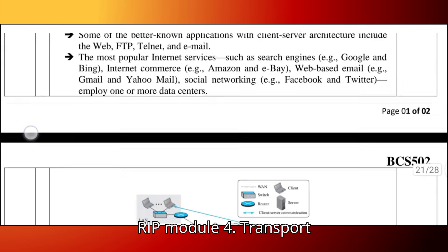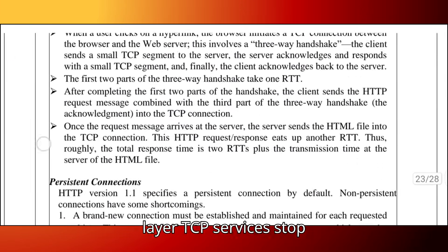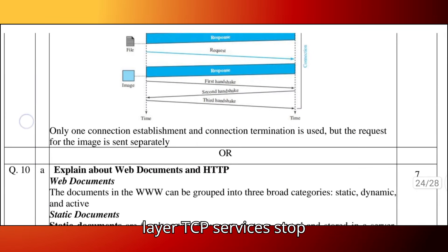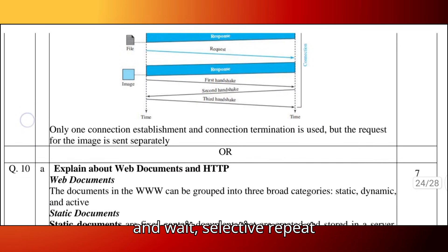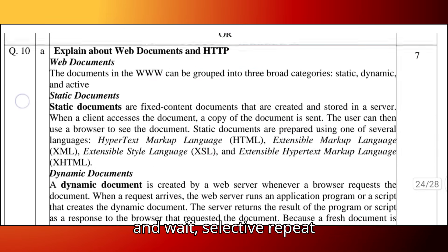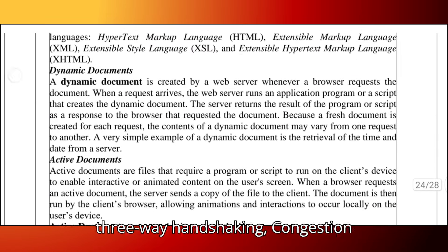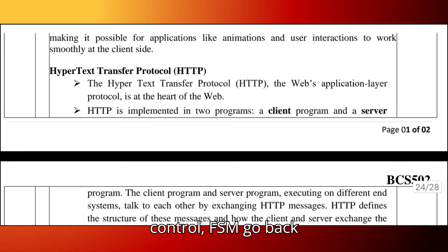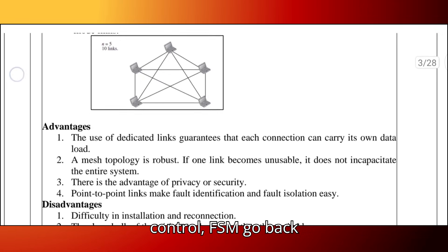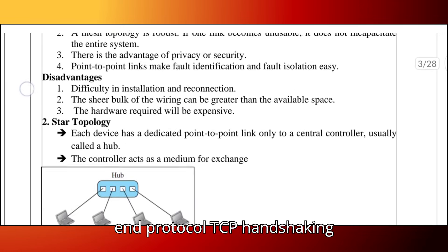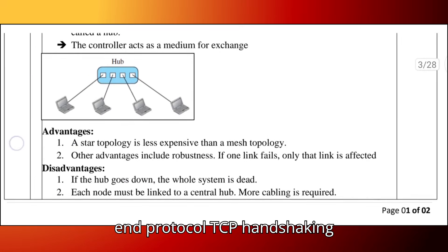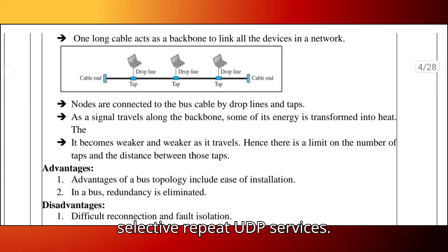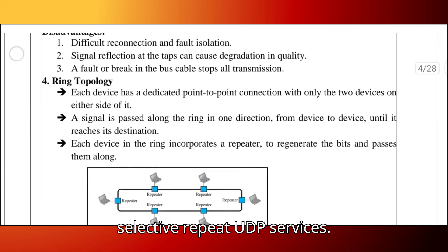Module 4 covers the transport layer, including TCP services, stop-and-wait, selective repeat, three-way handshaking, congestion control, FSM, go-back-N protocol, TCP handshaking, selective repeat, and UDP services.